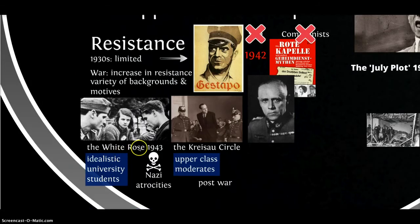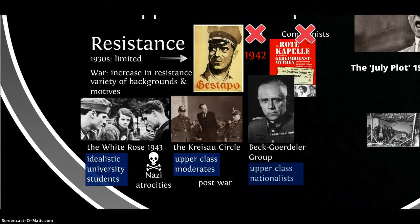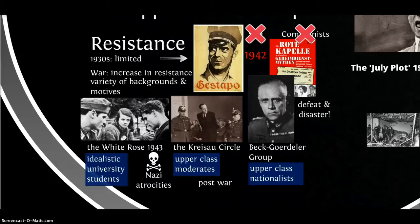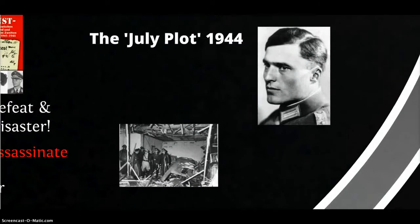All of these groups were eventually arrested and executed. There was also the Beck-Gördeler group — a group of upper-class nationalists. You might think these would have been allies of Hitler, but they despaired at what they saw him doing in terms of leading Germany into defeat and disaster. Within the Beck-Gördeler group there were some senior German army officers, and the plan was formulated to assassinate Hitler and then sue for peace with the Allies. This led to the July plot of 1944, also known as Operation Valkyrie.